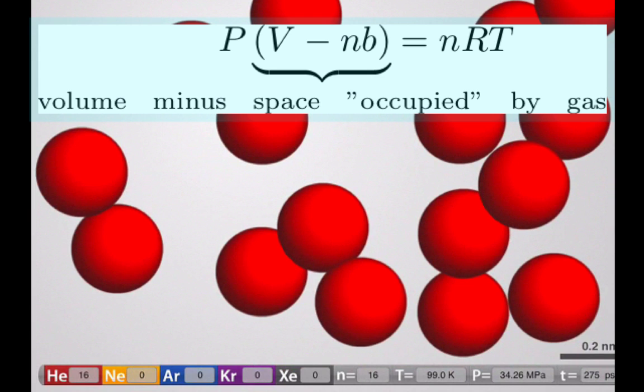On the other hand, if we go to high pressures where the molecules get close together, they're effectively taking up much more of the volume now. So now to get a better prediction of the real gas behavior, we need to correct the volume for the space occupied by the gas.